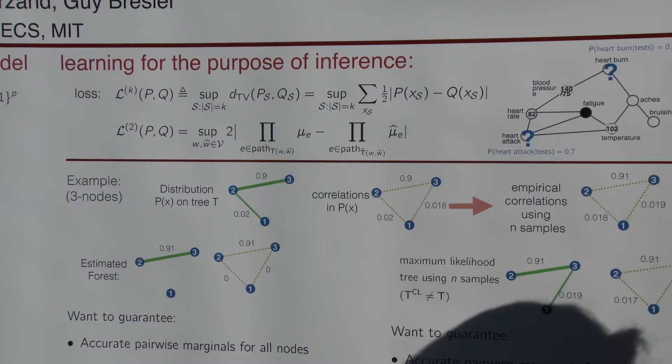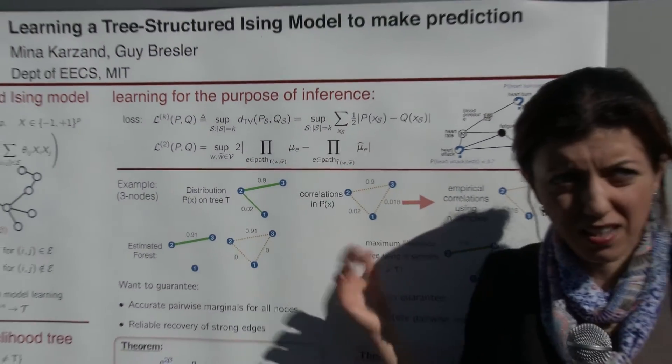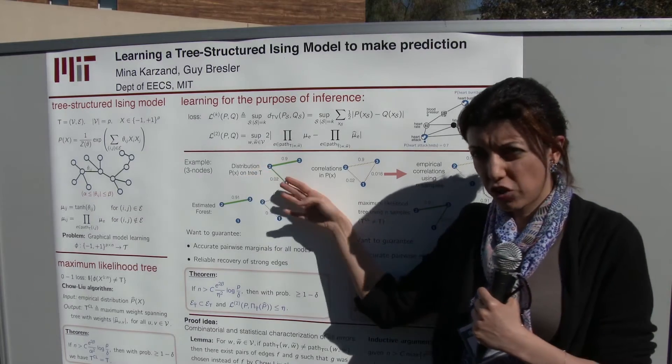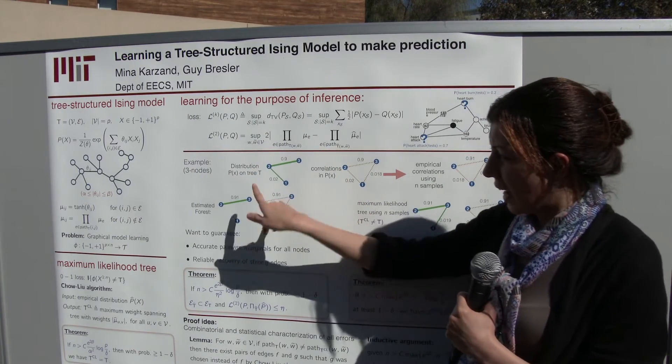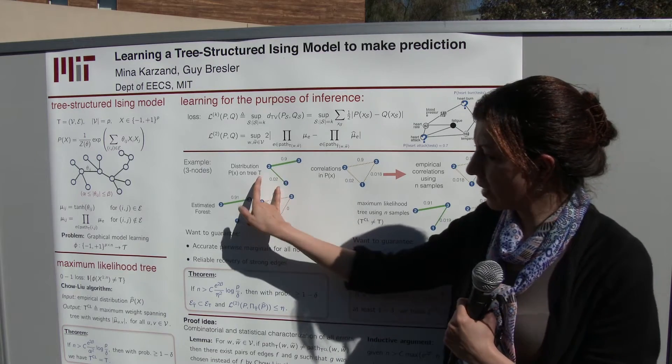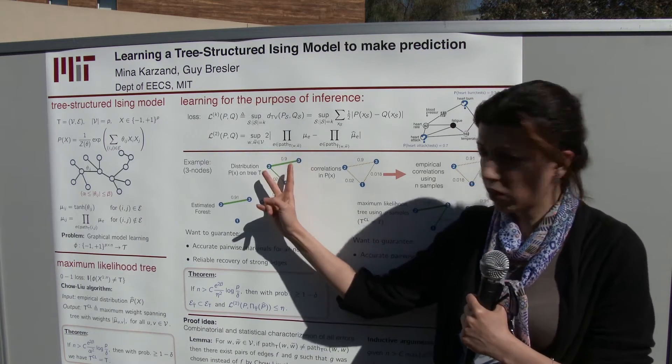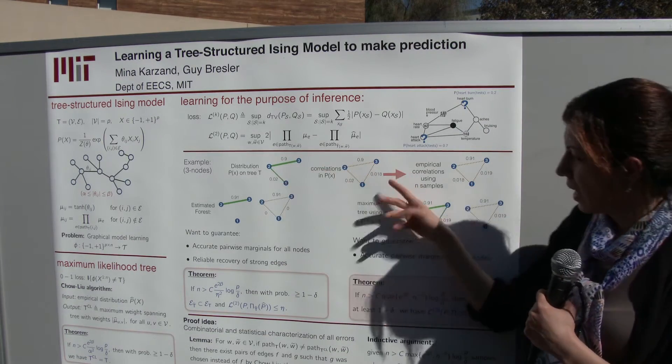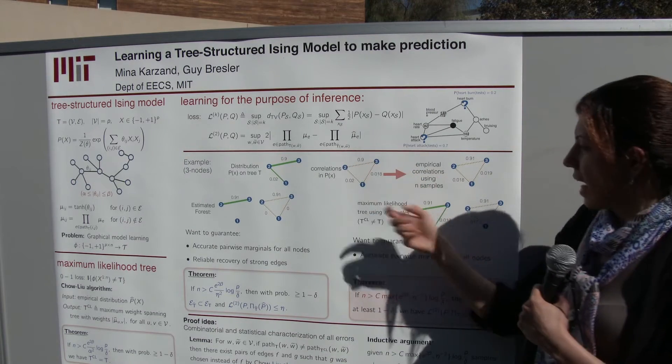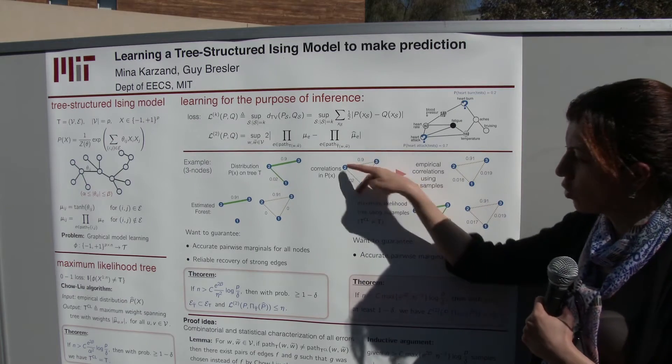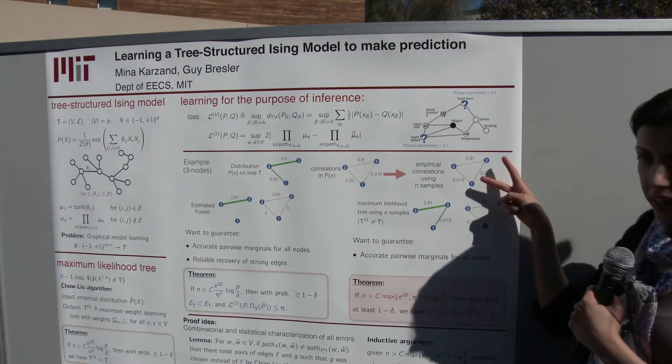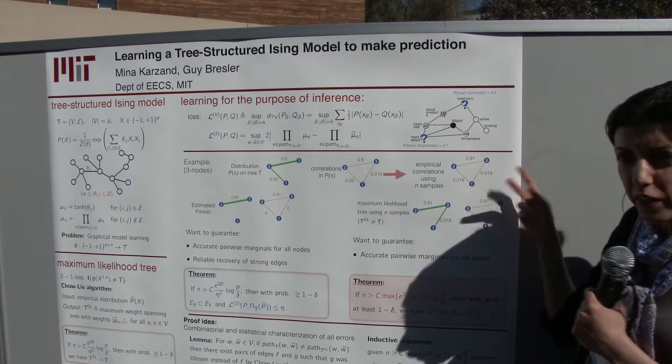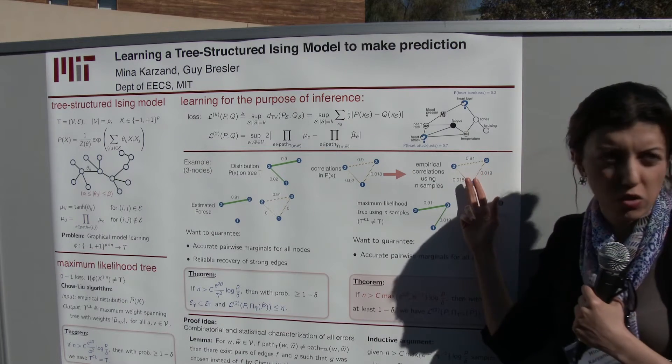I'm going to give you an example to show how changing this, studying this loss is going to change the sample complexity and change the algorithm. The example is the following. If the original distribution is coming from a tree, which is basically a Markov chain one, two, three, and these numbers are the correlation between the nodes. If nodes one and two are weakly correlated and nodes two and three are strongly correlated, the correlation between one and three is basically the product of these two numbers. Since these two numbers are very close to each other, I might be unlucky and get n samples such that this edge actually looks stronger than this edge. So it's very hard in this scenario to detect which of these edges exist in the original tree.